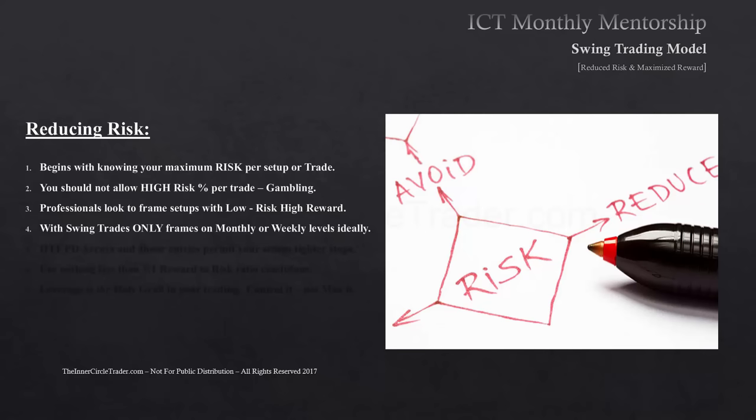With swing trades, we're only focusing on framing the monthly and weekly levels, ideally. When we look at monthly and weekly levels, that means the PD arrays for a premium — we're looking to sell those levels. That means we're looking for bearish order blocks, bearish liquidity voids to trade up into to sell short, optimal trade entries, bearish fair value gaps. We're looking for old highs to short, a false break above, rejection blocks with candles that have really long wicks — we're going to look to sell above the bodies of those candles. We're also looking to sell at old lows and old highs, as that same thing is seen as a premium.